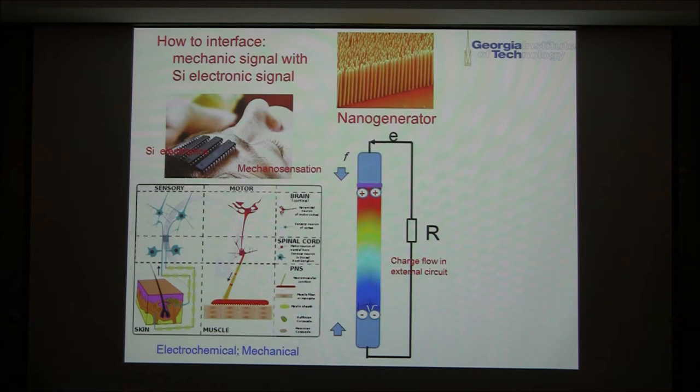In the early days, we demonstrated Piezotronics nanogenerators using piezoelectric materials. The idea is that on a mechanical strain, a polar charge is created at the two ends of the nanowires. This can be a driving force for electron flow through the external load back and forth, if you have a blocking layer that prohibits the electron flow through the wire. This is the driving force — this is the nanogenerator.